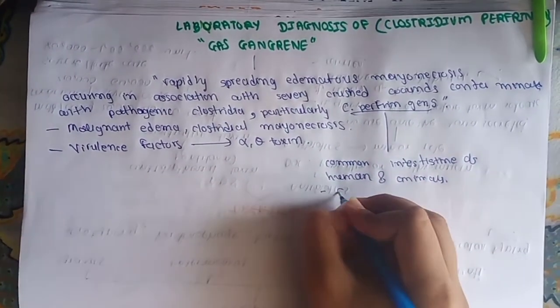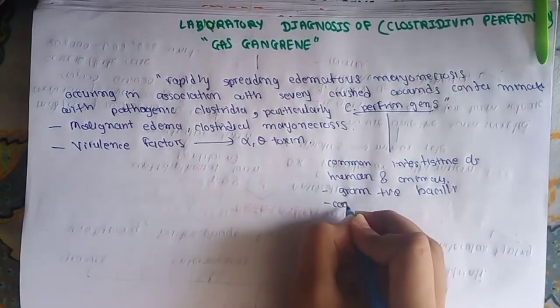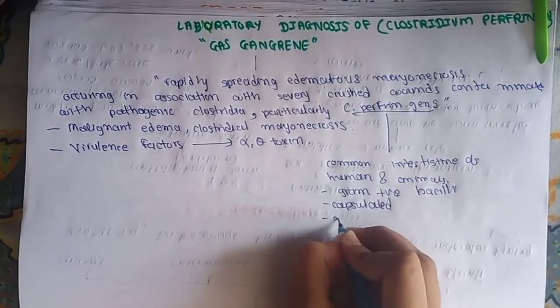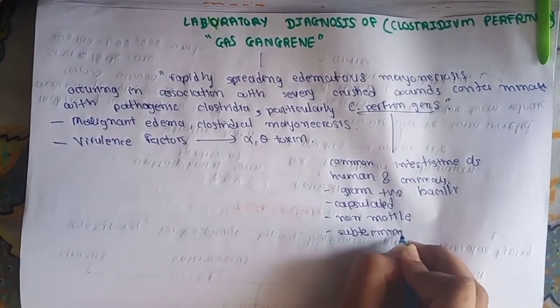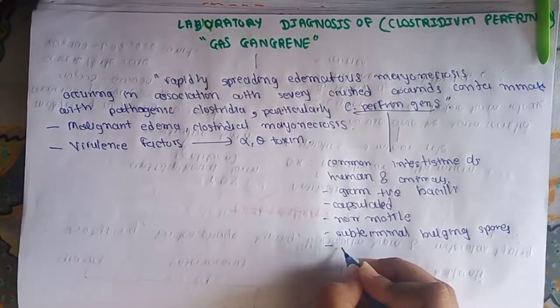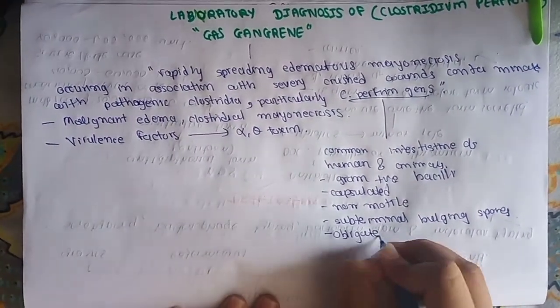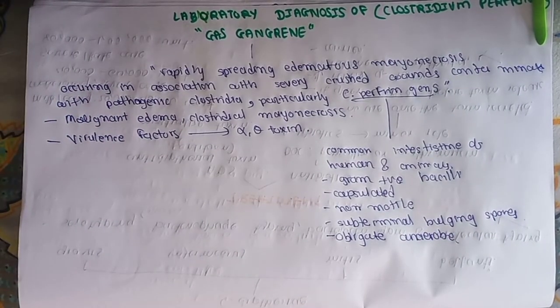C. perfringens is gram-positive bacilli, purple colored bacilli. They are capsulated, non-motile, and they have sub-terminal bulging spores. They are obligate anaerobes. They don't need oxygen to live and they can die in presence of oxygen.